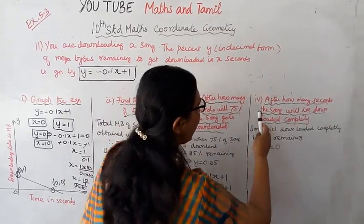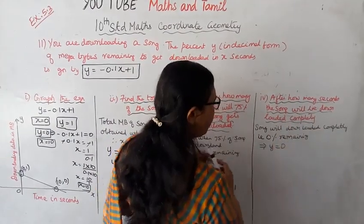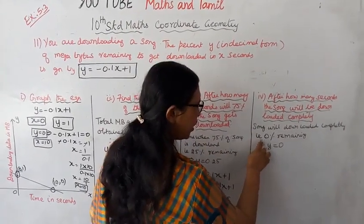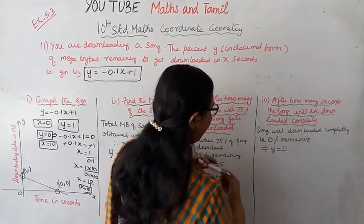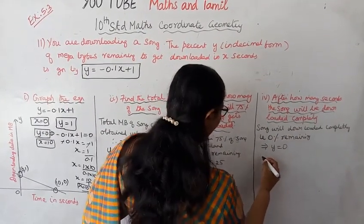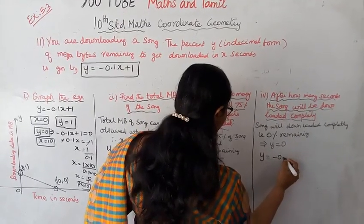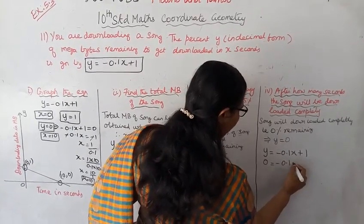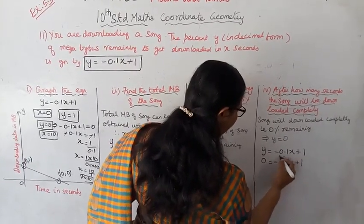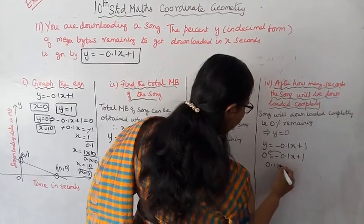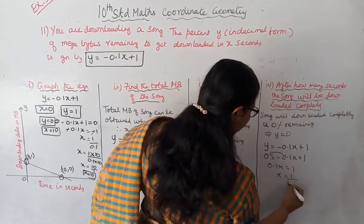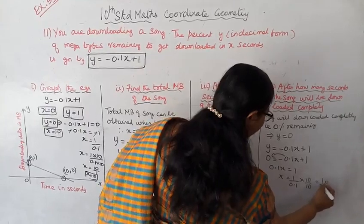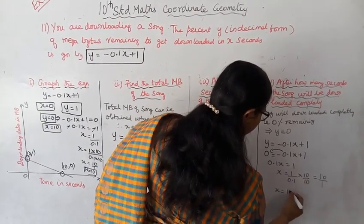Fourth part: after how many seconds will the song be downloaded completely? When the song is completely downloaded, 0 MB is remaining, so y equal to 0. Substituting into the equation: 0 equal to minus 0.1x plus 1. So 0.1x equal to 1, x equal to 1 by 0.1. Multiplying numerator and denominator by 10: x equal to 10 by 1, so x equal to 10 seconds.